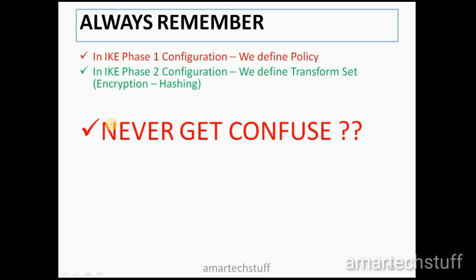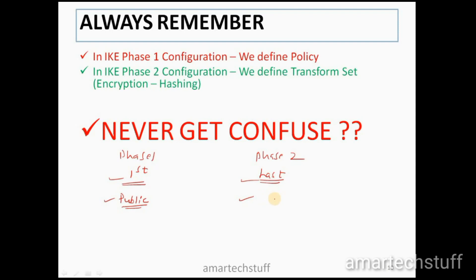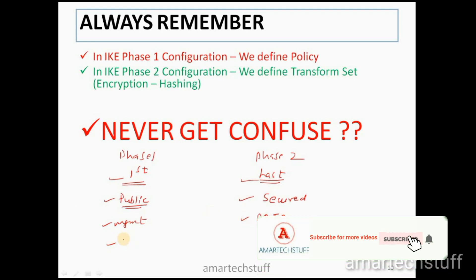Phase 1 is the first step or the first phase, and phase 2 is the second and last phase. Phase 1 tunnel is created on a public network and phase 2 tunnel is created on a secured tunnel — it is actually created over the phase 1 tunnel. That is a big difference. Also, the management traffic of IPsec VPN goes through the phase 1 tunnel, and the users' actual data traffic goes through phase 2.